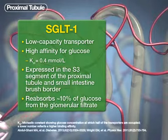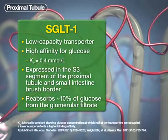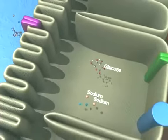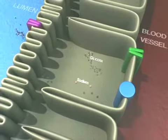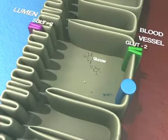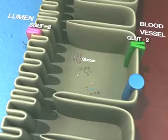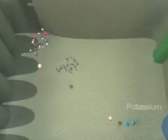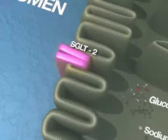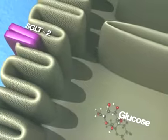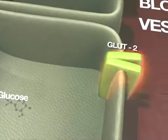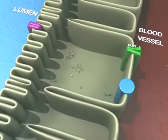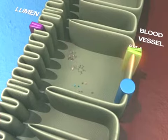SGLT1 is also expressed in the brush border of the small intestine, where it functions to absorb dietary glucose and galactose. Transporting glucose out of the tubule lumen is an active process that works against a glucose concentration gradient. To accomplish this, SGLTs rely on energy stored in an electrochemical sodium gradient, coupling glucose transport through a movement of sodium ions into the epithelial cell. Once inside the cells, glucose diffuses to the basolateral membrane and passively moves into the bloodstream by facilitative glucose transporters.